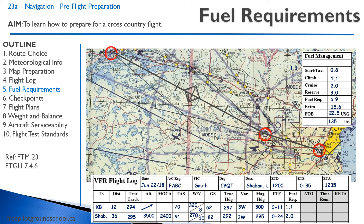If you're wondering how I got the fuel on board — in this case I have full fuel, so I go to fuel required, which is everything added up, and that's the minimum I need. I know I'm going to take off with full fuel, so I put fuel on board as 22.5 gallons. Then I subtract to find my extras — I have 15.6 extra gallons of fuel available.